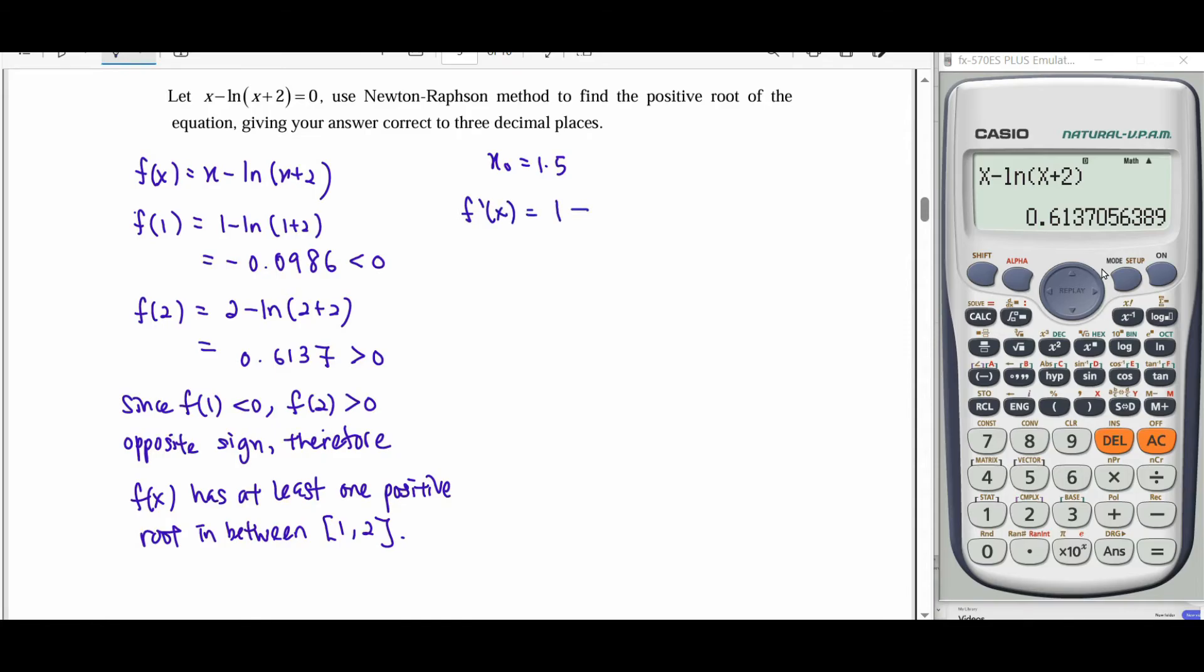So differentiate x, we get 1. Differentiate ln(x+2), take the function inside the log and differentiate it, which gives 1/(x+2). Then we start finding our x₁. Newton-Raphson method formula will be x_{n+1} = x_n - f(x_n)/f'(x_n).